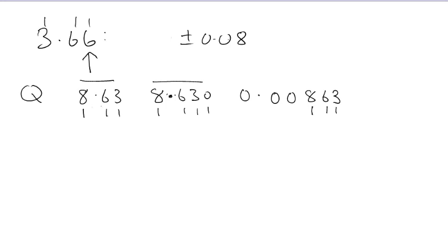In fact, the 8.63 and the 0.00863 could easily be represented in exactly the same measurement. For example, this could be 8.63 meters, and this could be 0.00863 kilometers. They're both three significant figures. In fact, the very same measurement.